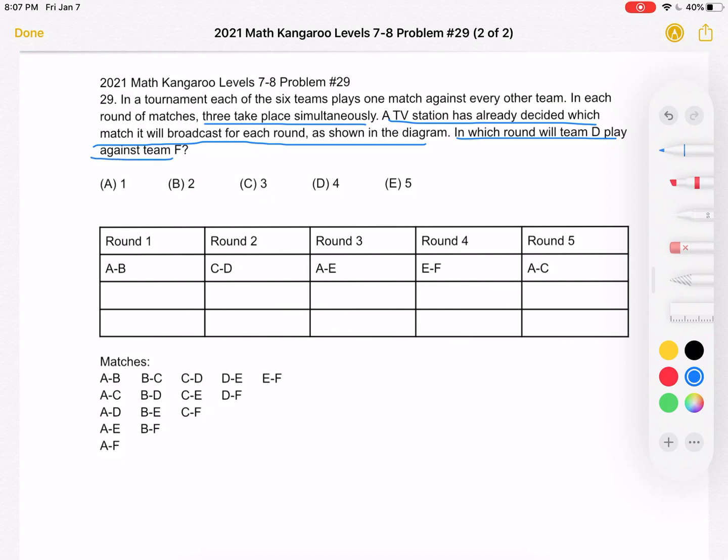So one way we can do this is to fill out as much of this table as we can. Down here, I wrote down all the different matches that happen. Again, we have six teams, and each one is playing against every other team.